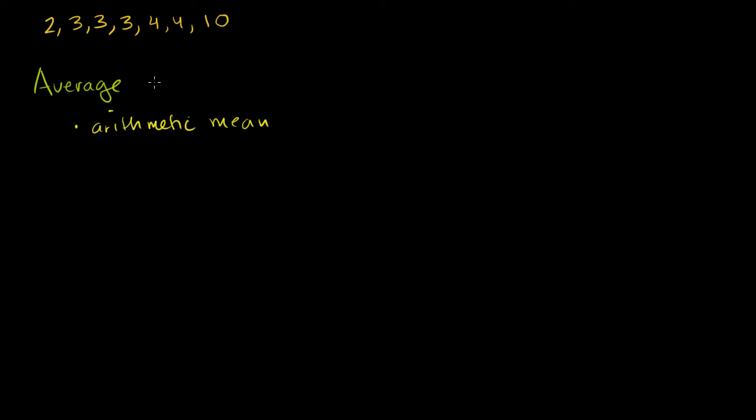Arithmetic mean, which literally says, look, the arithmetic mean of this set of numbers is literally the sum of all of these numbers divided by the number of numbers there are. So the arithmetic mean for this set right here is going to be 2 plus 3 plus 3 plus 3 plus 4 plus 4 plus 10.